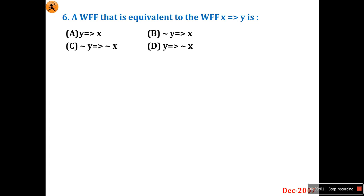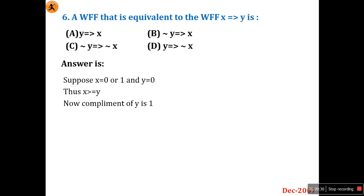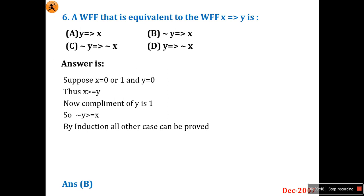Question 6: A well-formed formula equivalent to x→y is? Assume x = 0 or 1, and y = 0. Then complement of y is 1, and complement of y ≥ x holds. By contrapositive, x→y is equivalent to ¬y→¬x. This holds for all cases, so Option B — negation of y implies negation of x — is the right answer.